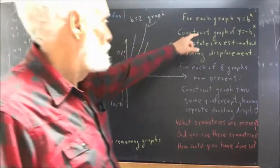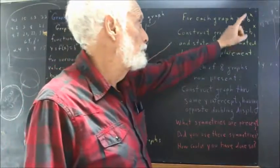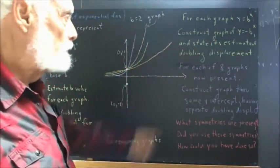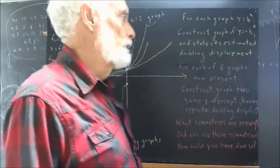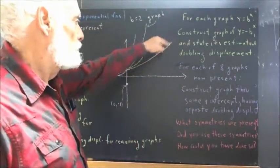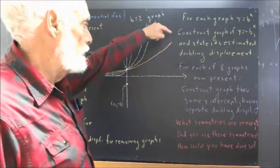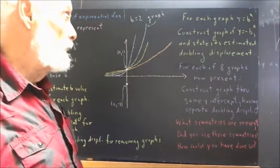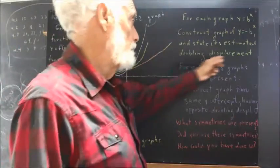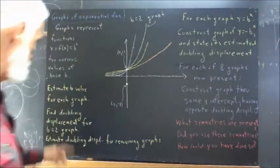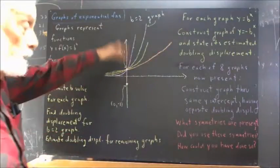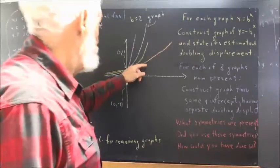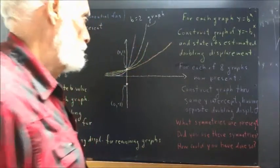Construct the graph of y equals negative b to the x and state its estimated doubling displacement. That means, for this graph, if this is your graph of b to the x, you want to construct the graph of negative b to the x and state the estimated doubling displacement for that graph. Now, you've already estimated doubling displacements for the four graphs. That might or might not be helpful. So, you want to do that for each of these four graphs.